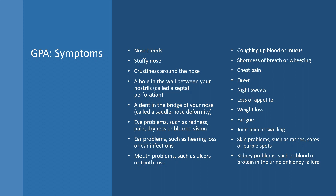There are many symptoms that can present for people who have GPA. Nosebleeds or a stuffy nose, crustiness around the nose. In some people, if it goes on, a hole can actually develop in the wall between your nostrils, and you can get a dent in the bridge of your nose. You can have eye problems, ear problems, mouth problems, coughing, shortness of breath, chest pain. It could be less specific — fevers, night sweats, loss of appetite, fatigue. As with many rheumatology conditions, you can have joint pain and swelling, skin rashes and problems, and kidney problems as well. This is certainly not a complete list.